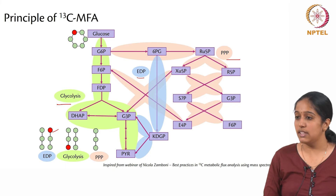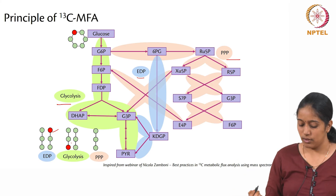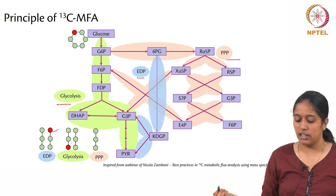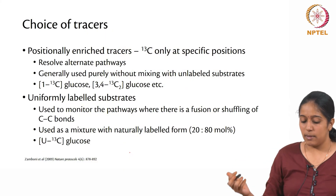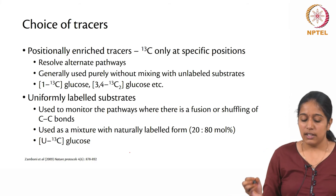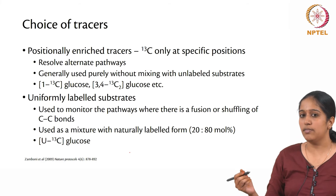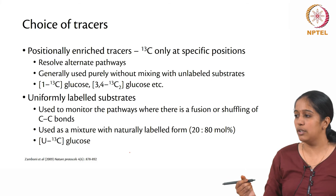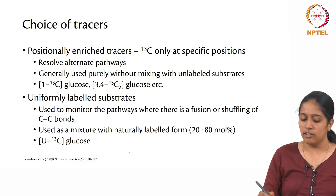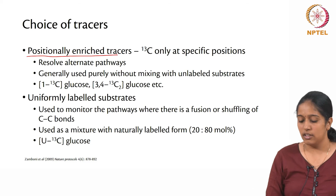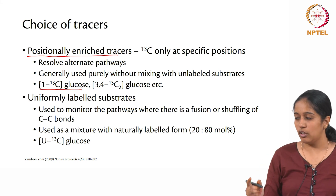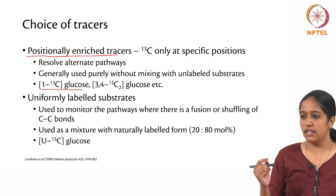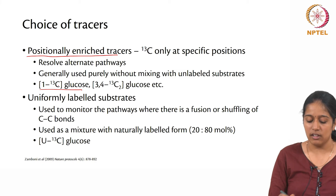This is a general representation of the principle of C13 analysis — with this you can trace how carbon flows from the source to the target, in this case pyruvate. When talking about identifying these pathways, here comes the choice of tracers. If pyruvate is coming from the pentose phosphate pathway it is not going to have a label. This can be inferred only if you use a positionally enriched tracer, meaning you use a substrate which has labels only at a particular position of the carbon.